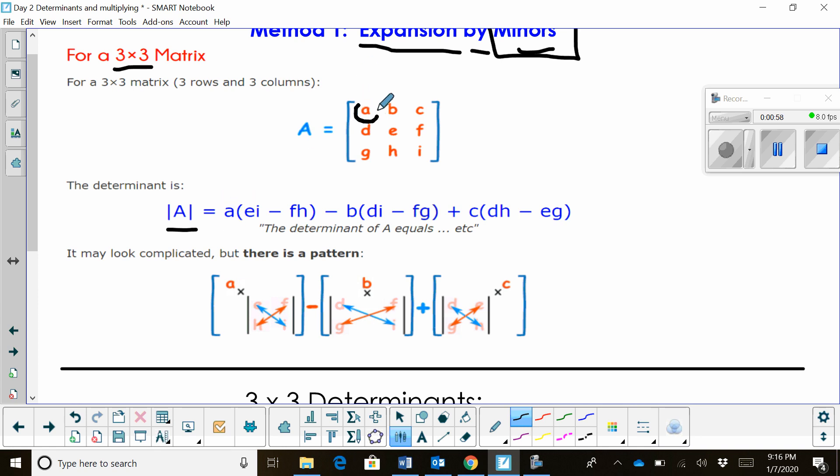We're going to notice my first entry times E times I minus F times H. If you take out this column and this row that A is in, we have a 2 by 2 matrix. And this part of the formula actually represents the 2 by 2's determinant.